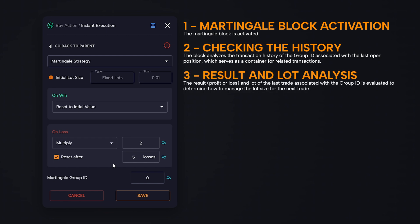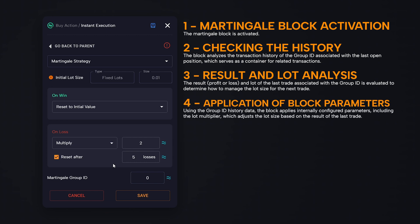Result and lot analysis: the result — profit or loss — and lot of the last trade associated with the group ID is evaluated to determine how to manage the lot size for the next trade. Application of block parameters: using the group ID history data, the block applies internally configured parameters, including the lot multiplier, which adjusts the lot size based on the result of the last trade.